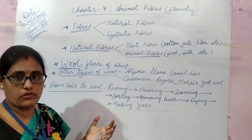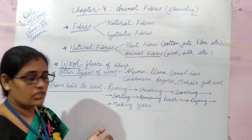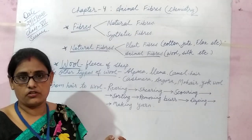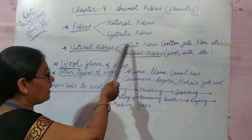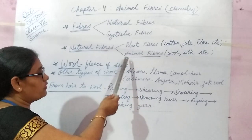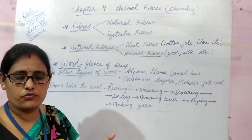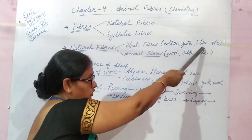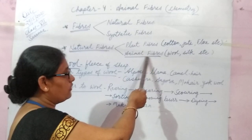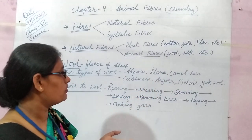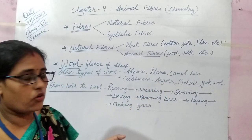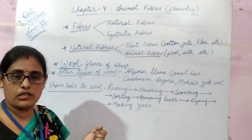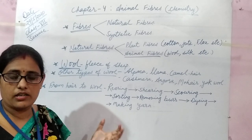Now let's talk about fibers and their varieties. There are two types of fibers: natural fibers and synthetic fibers. Natural fibers are again of two types: plant fibers and animal fibers. Natural fibers are those obtained from nature, like plants and animals. Cotton, jute, flax, etc. are plant fibers. The main base of plant fibers is cellulose, and animal fibers are made up of proteins, which is a complex compound that makes a major part of our body.